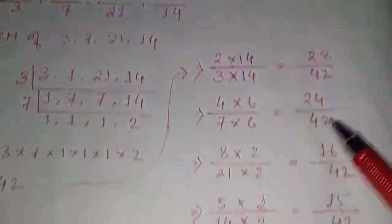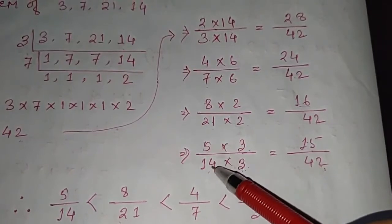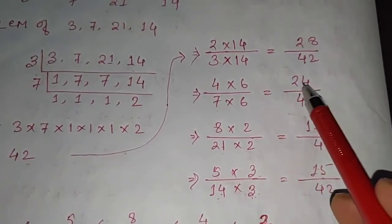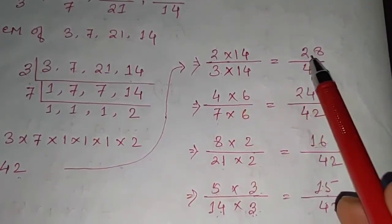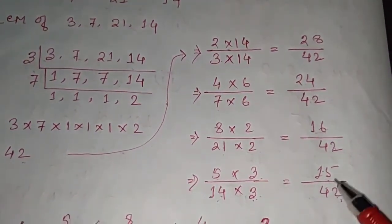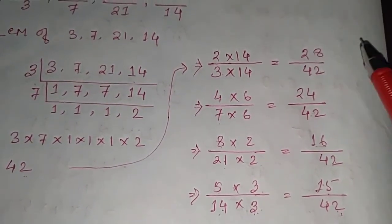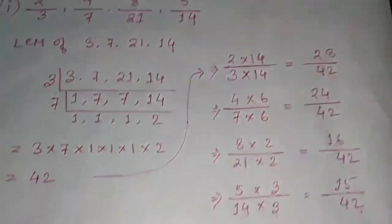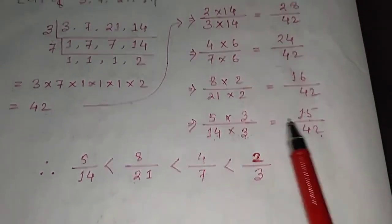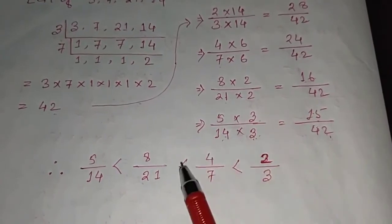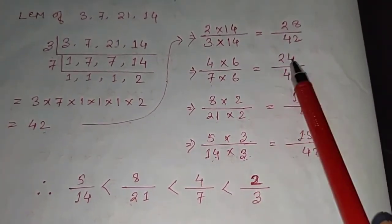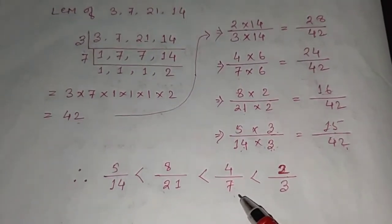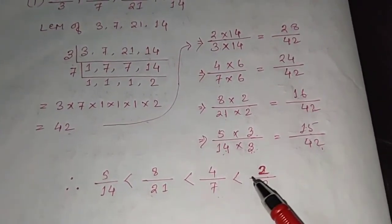Since denominators are all 42, compare numerators to arrange in ascending order: 15 < 16 < 24 < 28. So the ascending order is: 5/14 (smallest), then 8/21, then 4/7, then 2/3 (largest). The rest is homework.